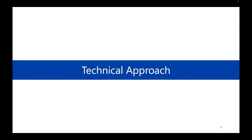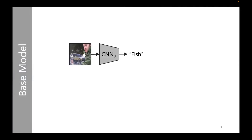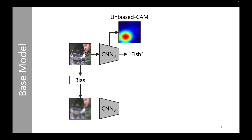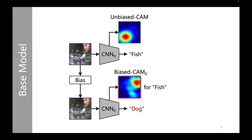Now let me show how our technical approach works. A CNN model trained with clean images can produce more meaningful saliency maps, or so-called unbiased CAMs. However, when querying with blurred images, this model not only has a chance to predict wrongly, but also generates deviated saliency maps — biased CAMs — that highlight irrelevant pixels.